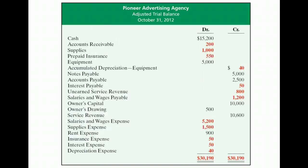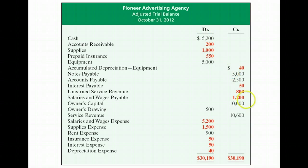Here is an adjusted trial balance for Pioneer Advertising Company. You can tell it's an adjusted trial balance because it says so in its heading, and it's dated as of October 31st, 2012. Notice the good formatting techniques being used: there's a dollar sign at the beginning of each column and at the bottom of each column, and totals are underlined twice to show that the mathematics have been checked and this is ready to have financial statements prepared from it. The accounts shown in red are the ones that changed due to adjusting entries.